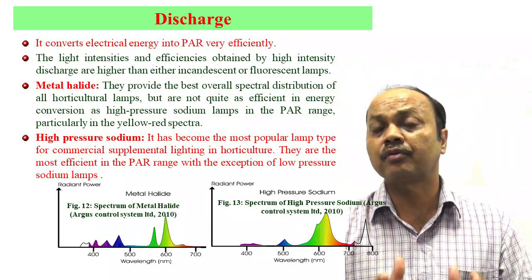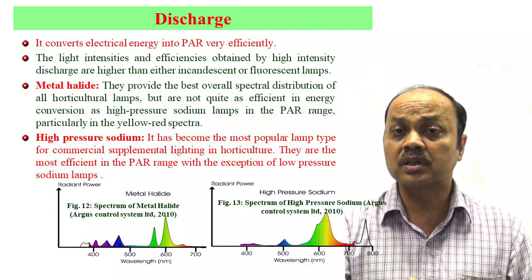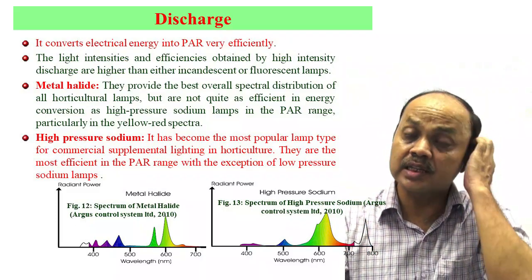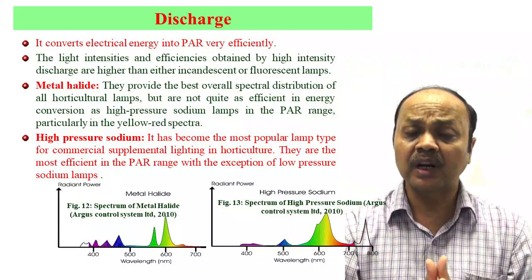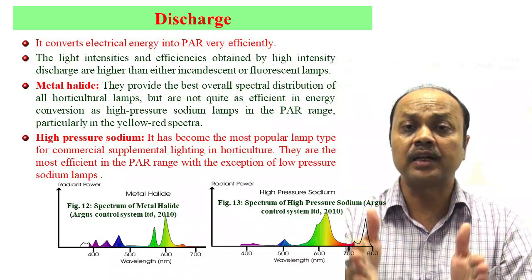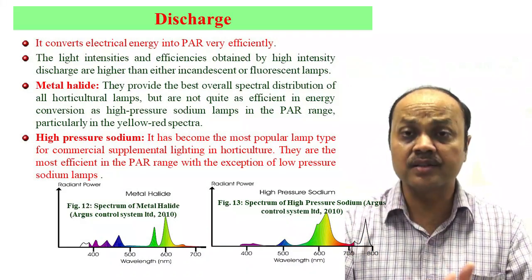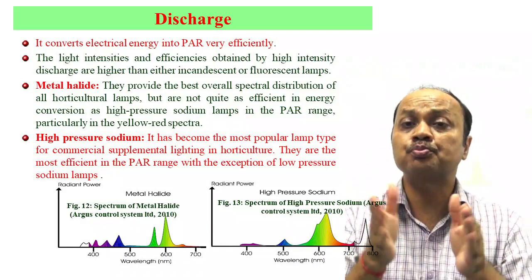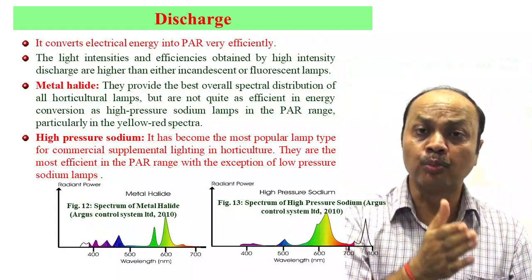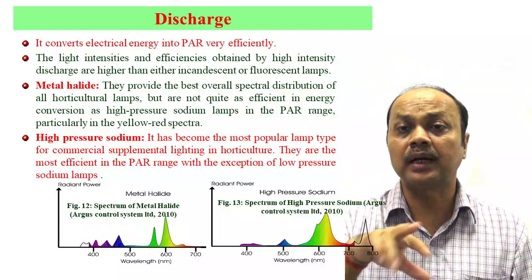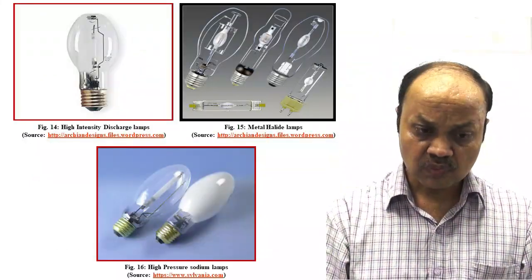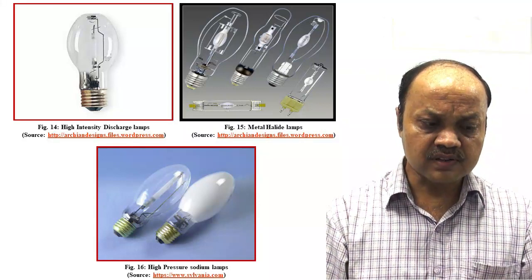When using artificial light, we are more concerned about which part of the spectrum is predominant in the PAR range. Apart from the PAR range, it also matters which portion of light — more red or more blue — the plant is receiving. Depending upon the crop requirement it will vary. You can see pictures of high intensity discharge lamps, metal halide lamps, and high pressure sodium lamps.